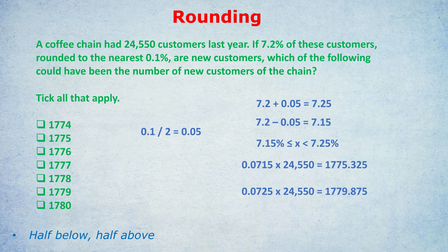Pause and try to pick the right answers based on this range. You should have picked numbers between 1776 and 1779. Why? Because the lower bound is 1,775.32, so our answer has to be above that — it doesn't include 1,775, since 1,775 exactly is below 1,775.32. We have to start with 1,776.